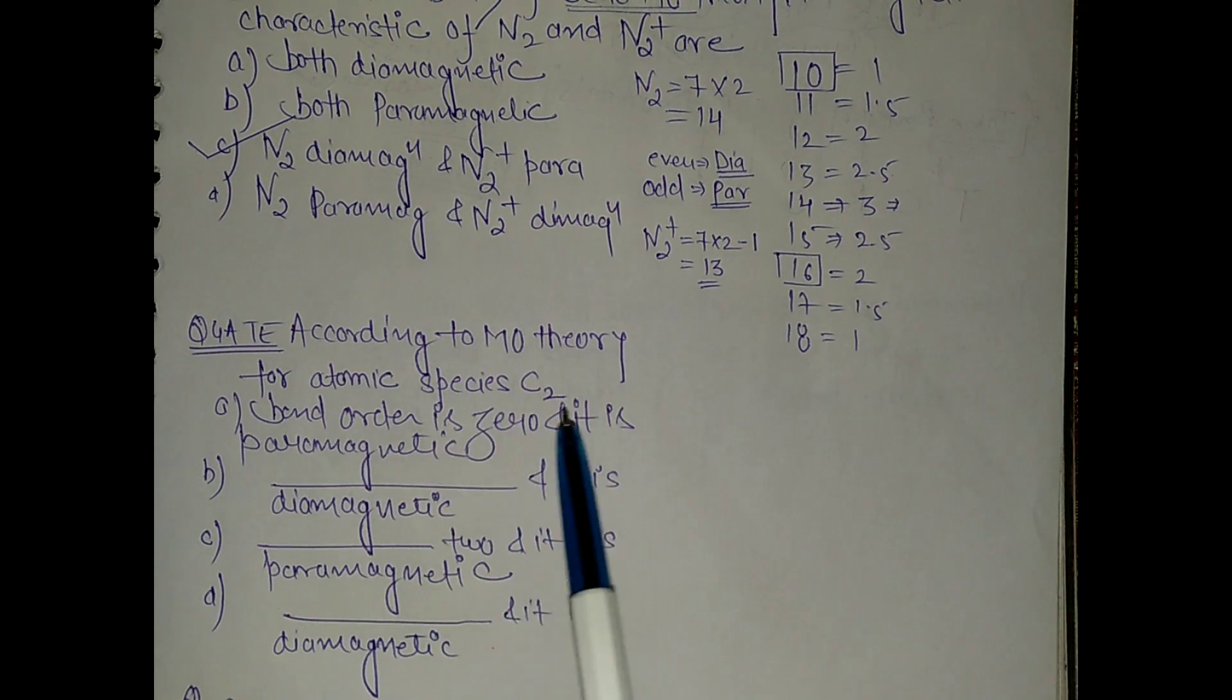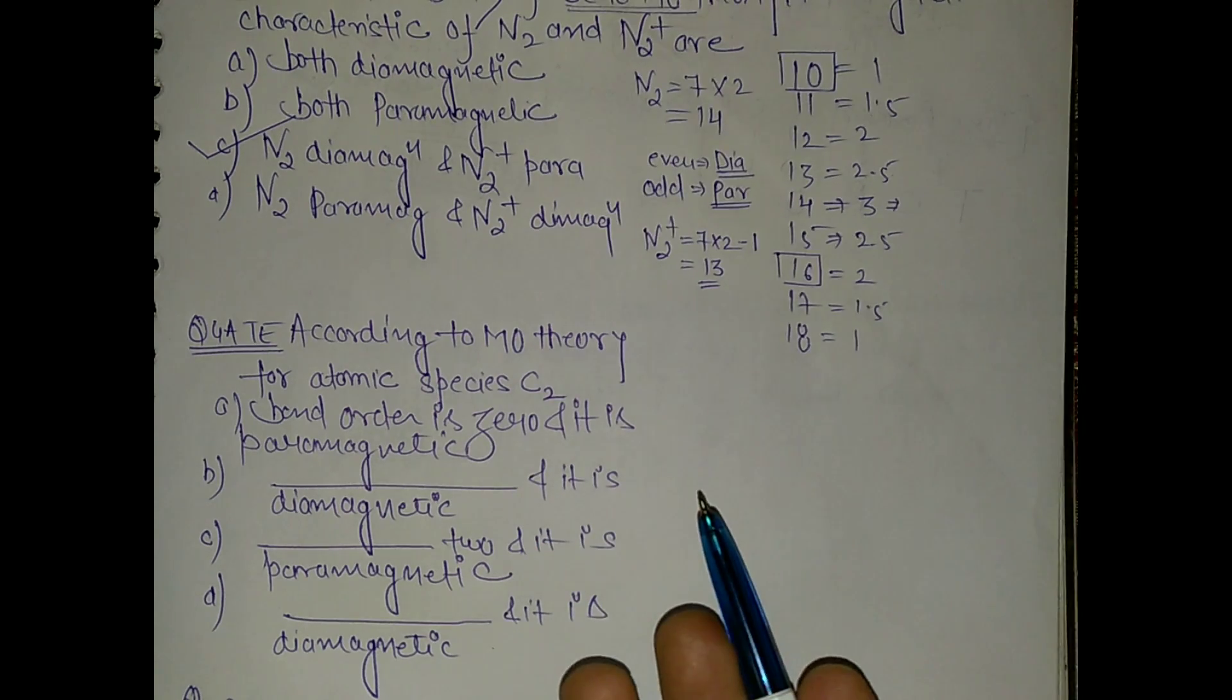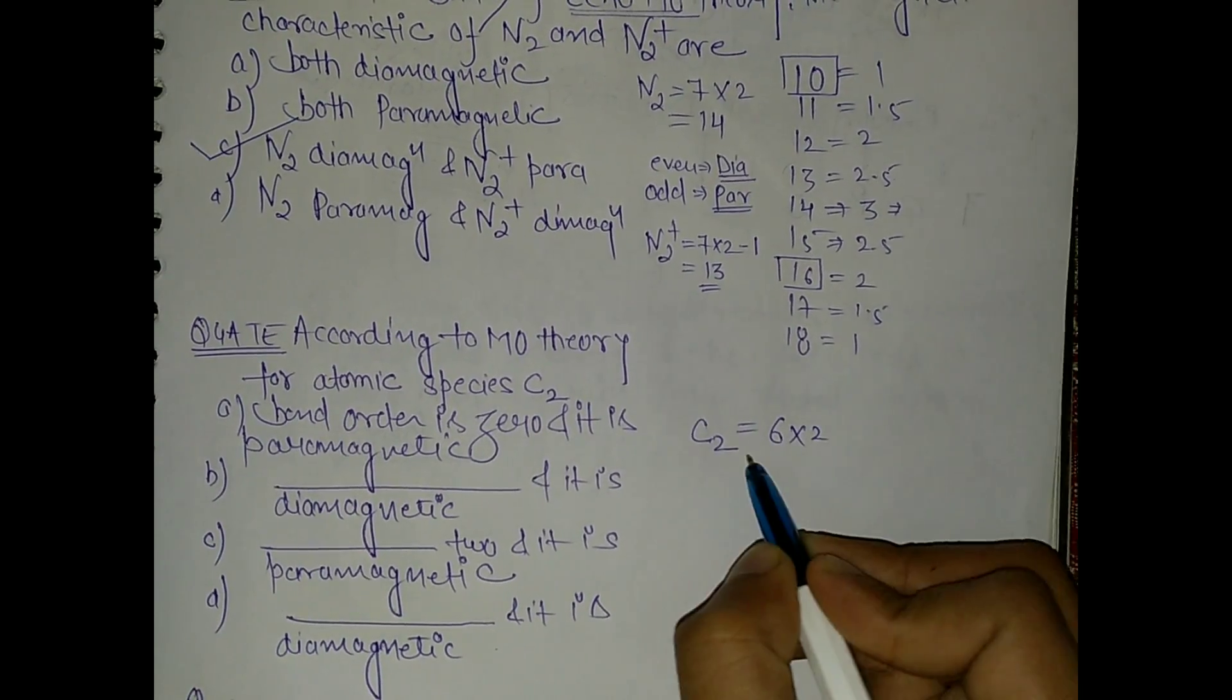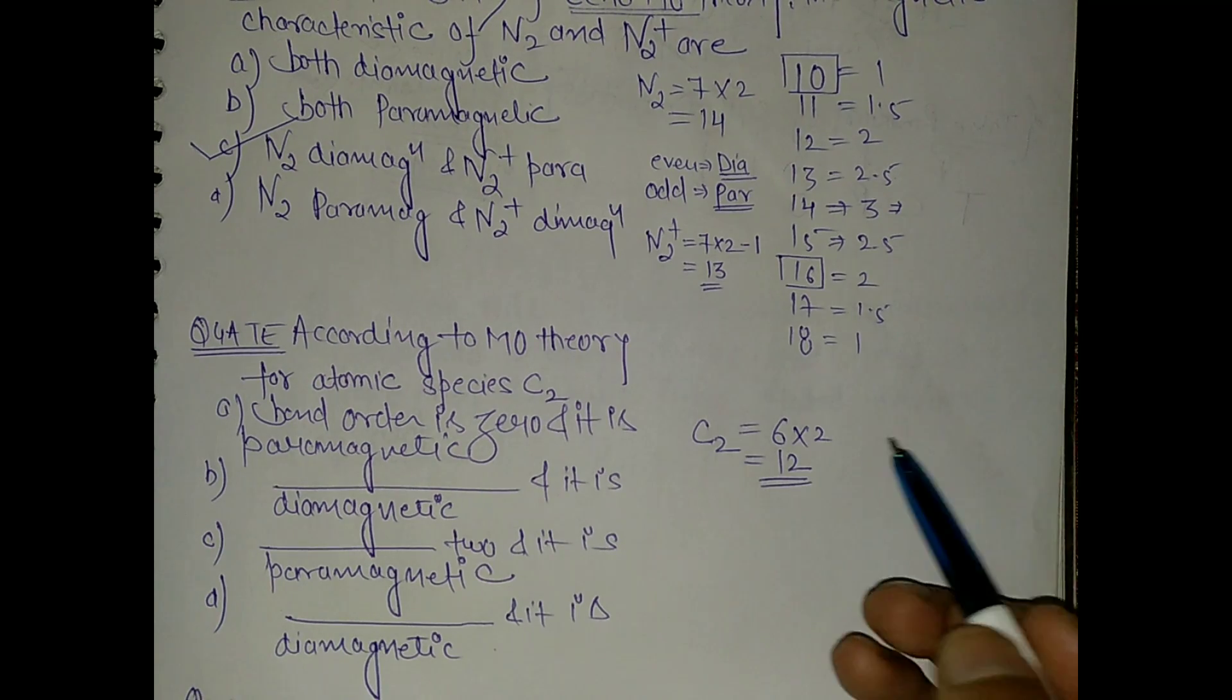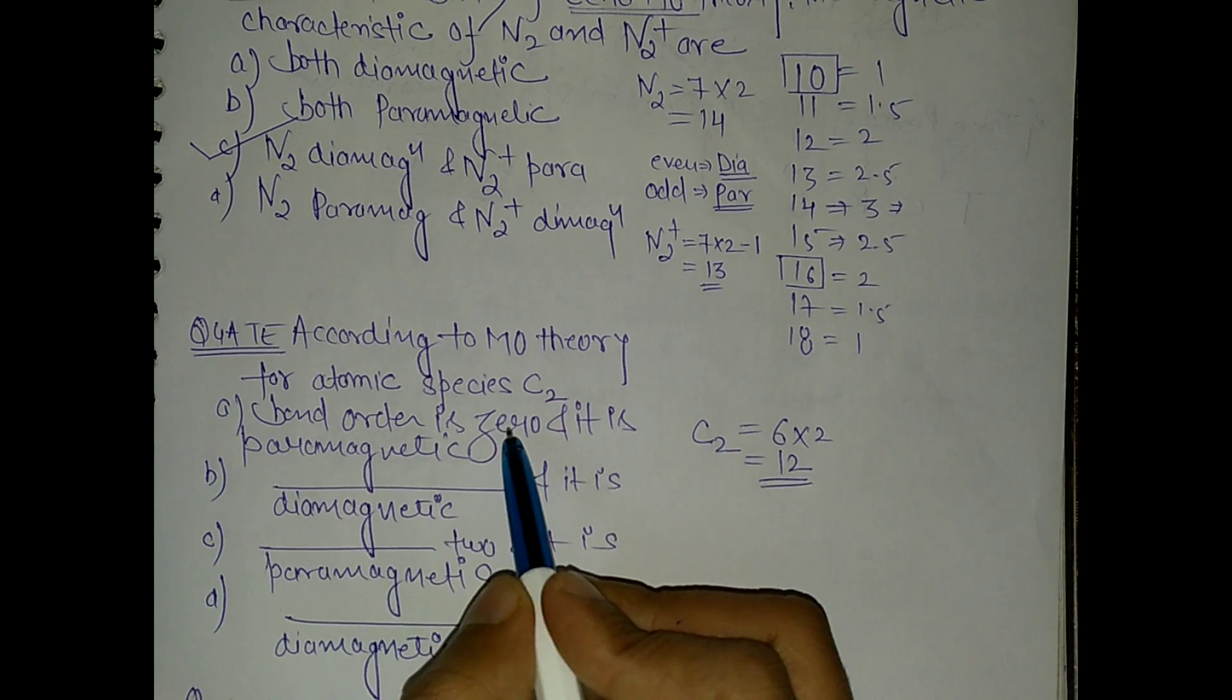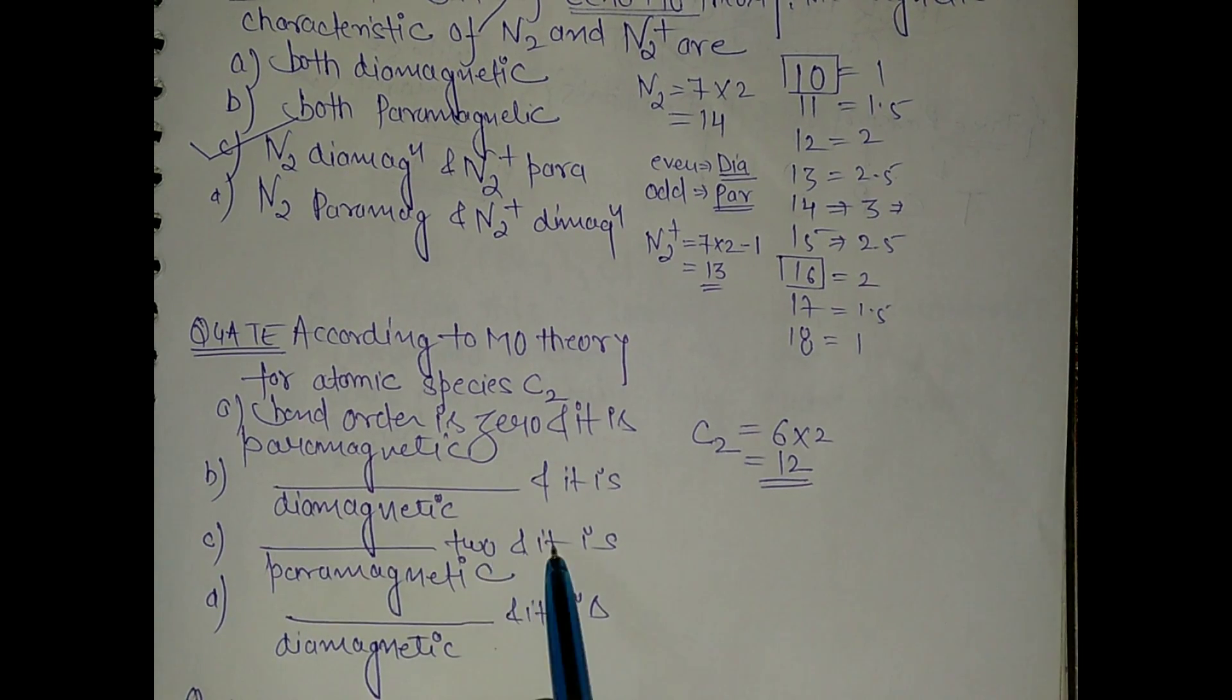According to MO theory for C2, we have to calculate the bond order and its para or diamagnetism. Now see, C2 means carbon has 6 electrons total, so 6 into 2 is 12. And 12 means this is an even number and it will be diamagnetic. And the bond order - this is 12, so we have 2. So the bond order is 2 and it is diamagnetic, so B is the right answer.